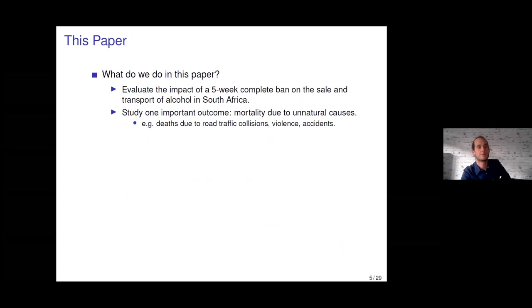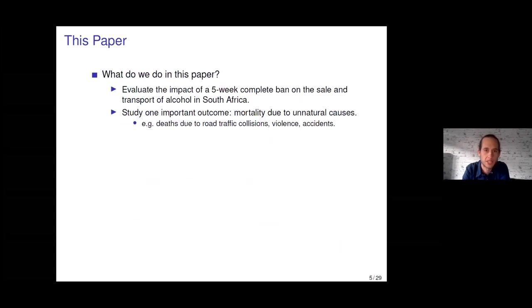We're essentially evaluating the impact of the five-week complete ban on the sale and transport of alcohol that occurred in South Africa starting in July of 2020. Since this is a South African audience, I'd just like to mention that we're not evaluating the impact of the first alcohol ban that occurred during lockdown — I'll come back to why. In this paper, we're examining only one important outcome: mortality due to unnatural causes.